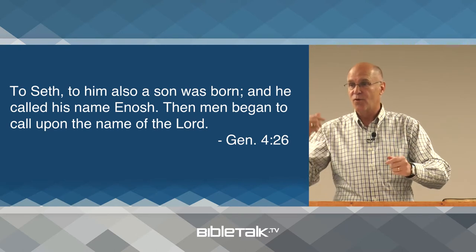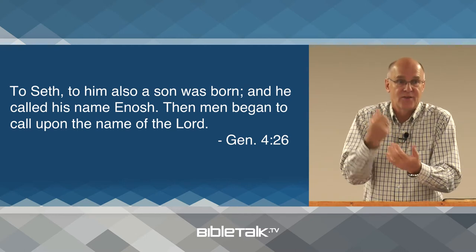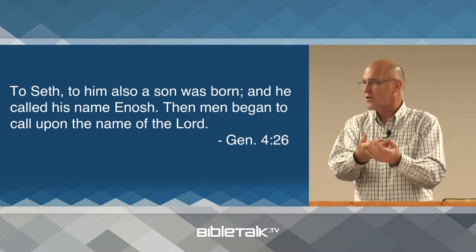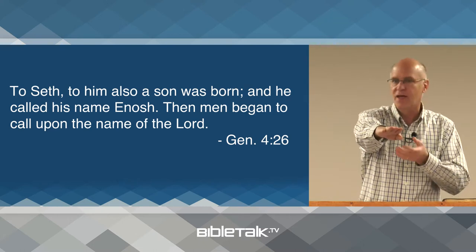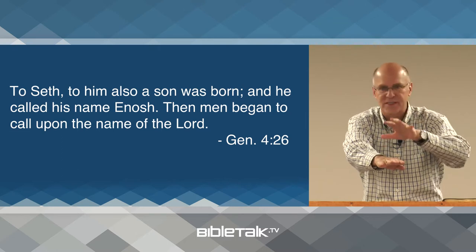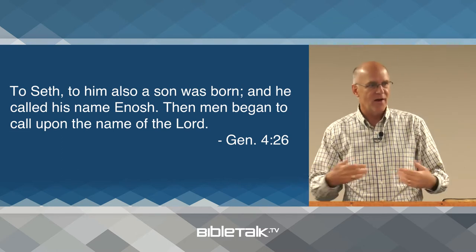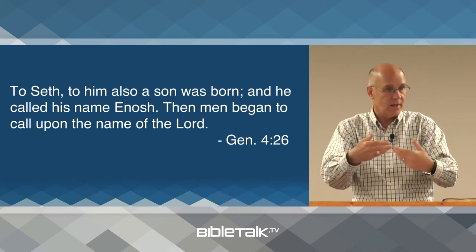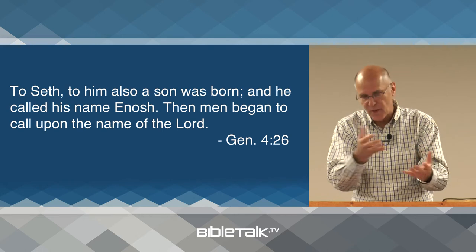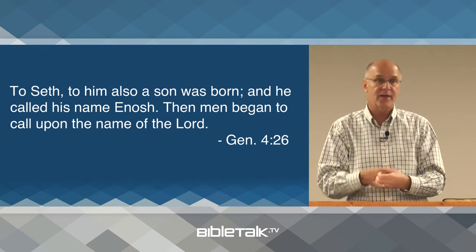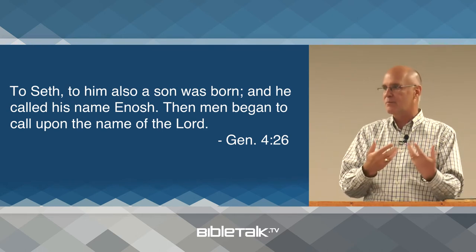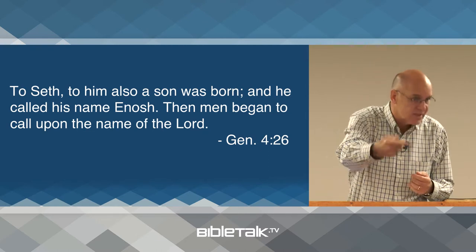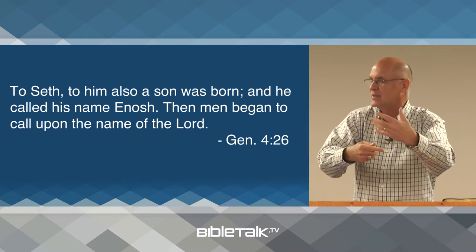The way Adam and Eve expressed their belief in the promise of God was that they had children, because God said through your children salvation will come — the seed of promise will come through your children. But if they don't have any children, that promise is not going to happen. So they have children; it was their way of saying 'we believe God.' Despite the difficulty, we're going to go ahead and have children. Then Cain killed Abel — again a disappointment and fear. They continued to have children until Seth is born, and Seth's son finally provides that spiritual leadership.